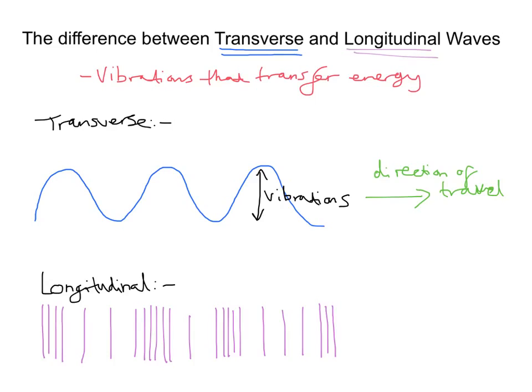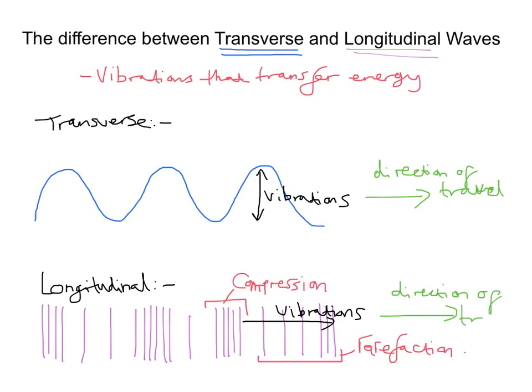So with longitudinal waves, what we have are regions of compression. So we'll just label these on here. So these are regions where we get compression. And here, we have regions where we get rarefaction or spreading out. Now, the vibration, this time I can say, is travelling in this direction. So I can put there, vibrations. And that matches the direction of travel.